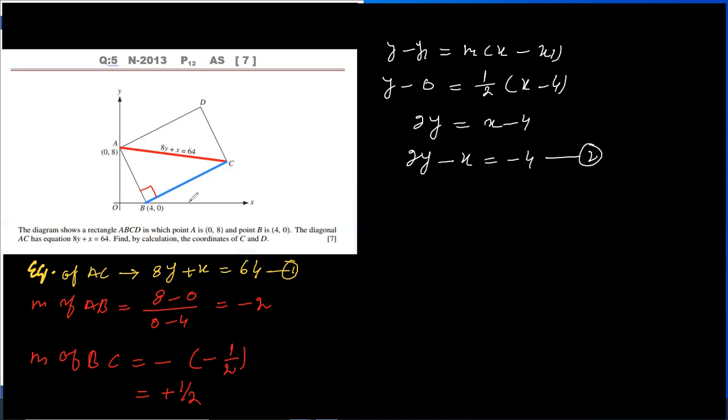Now we have equations of BC and AC. Solving equations 1 and 2 simultaneously, we can get the point of intersection. Value of X is 16 and value of Y is 6. So the coordinate of C is 16, 6.